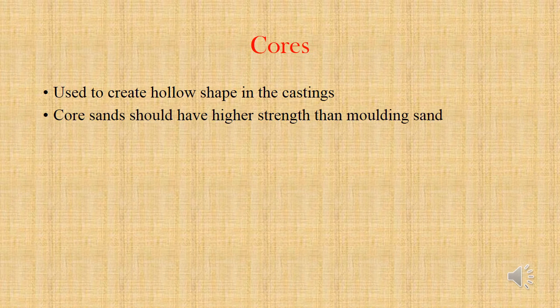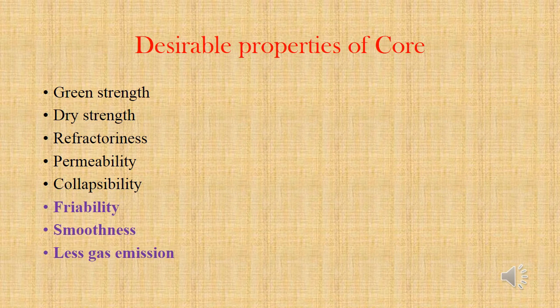Now we are going to see cores. A core is used to create hollow shapes in casting, and it is prepared separately in molding because it should have higher strength than the molding sand. Also, the core should have higher refractoriness because it will be entirely surrounded by molten metal. The desirable properties of core include green strength, dry strength, refractoriness, permeability, collapsibility — similar to molding sand — and additionally, friability, smoothness and less gas emission.